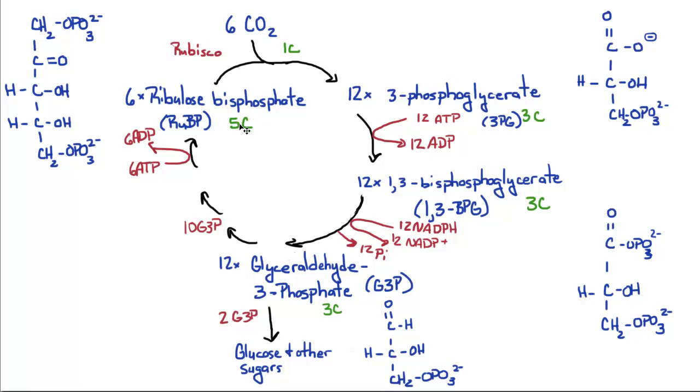which are five-carbon molecules. Rubisco combines these two to make 12 3-phosphoglycerates. The structure is just a three-carbon molecule with a phosphate on the third carbon.